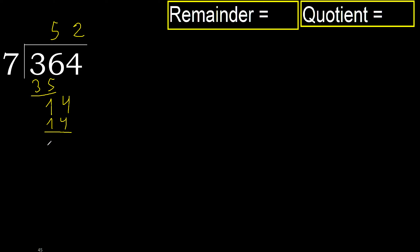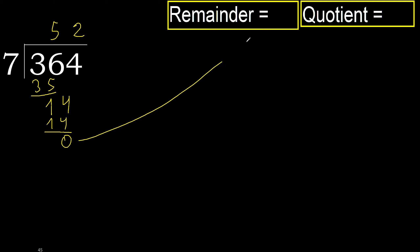Subtract: 14 minus 14 is 0. Next — there is no number, therefore finish.